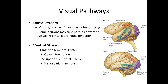The dorsal stream participates in the visual guidance of movements for grasping. Some neurons can convert information from our eyes into coordinates we can use for actions such as kicking a ball during a soccer game. Within the ventral stream, the most ventral pathway going to the inferior temporal cortex is important for the perception of objects including color and faces — for example, seeing a book on your desk. The pathway going towards the superior temporal sulcus is important for visual spatial functions such as perceiving movement.